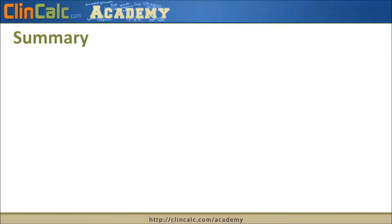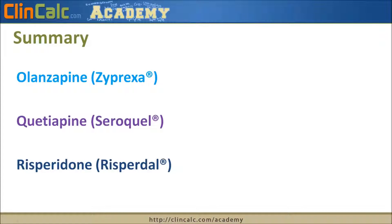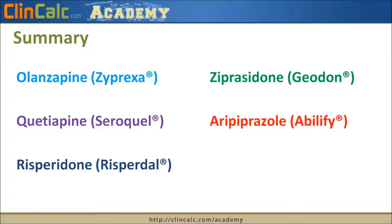To summarize the five atypical antipsychotics: olanzapine or Zyprexa is associated with significant metabolic syndrome and weight gain. Quetiapine or Seroquel is a very sedating atypical. Risperidone or Risperdal is the closest atypical to a typical antipsychotic, with EPS symptoms and hyperprolactinemia leading to gynecomastia. Ziprasidone or Geodon has very little weight gain and a mild QT prolongation signal. And aripiprazole or Abilify is a partial dopamine agonist — a dopamine system stabilizer — that is activating, potentially causing insomnia and akathisia.